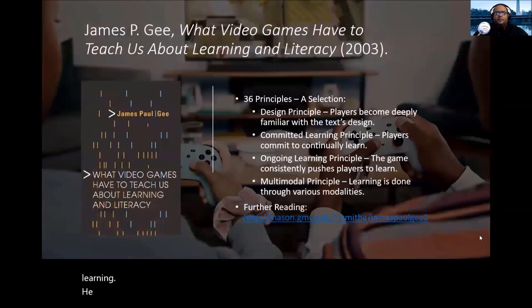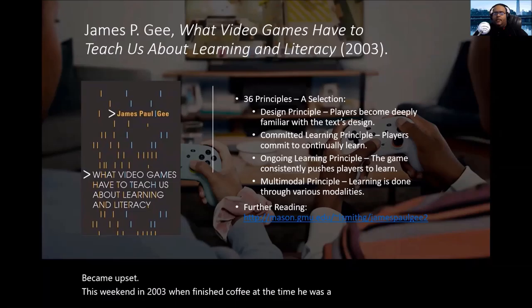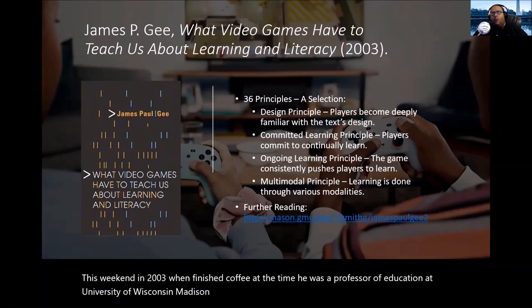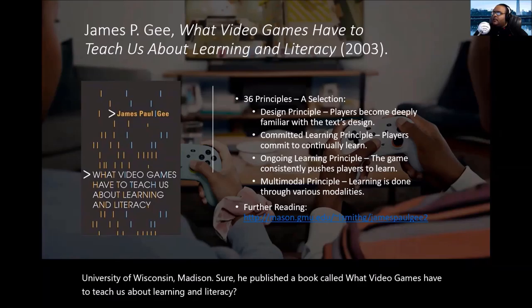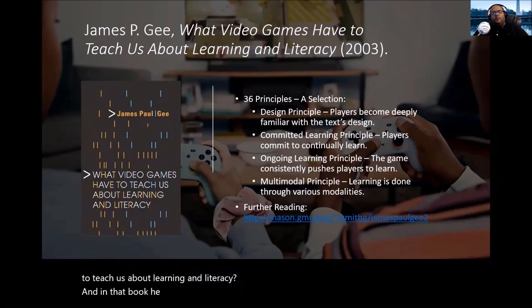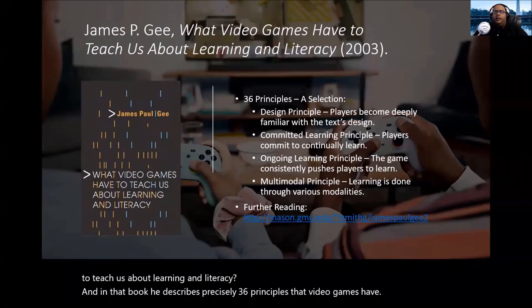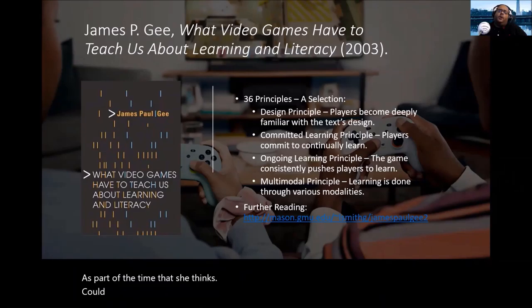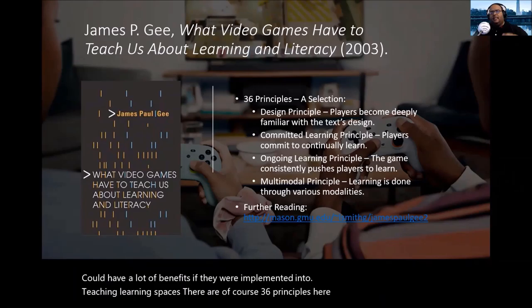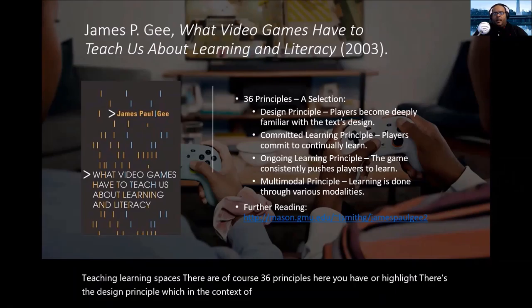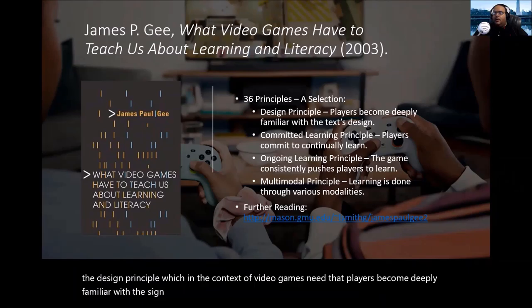This began in 2003 when James Paul Gee — at the time a professor of education at the University of Wisconsin-Madison — published a book called What Video Games Have to Teach Us About Learning and Literacy. In that book, he describes precisely 36 principles that video games have as part of their design, which he thinks could have a lot of benefit if implemented into teaching and learning spaces. Here you have four highlighted.